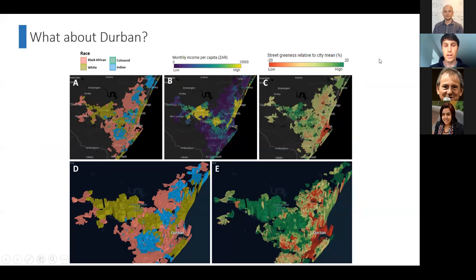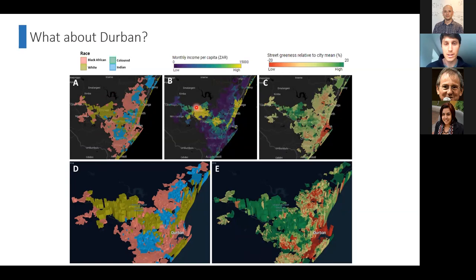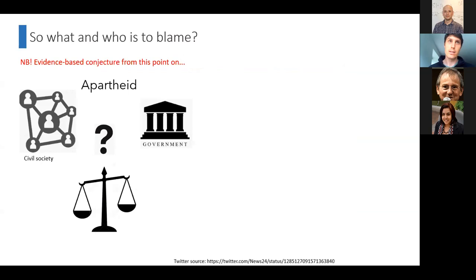Looking at eThekwini municipality specifically: on the left is the dominant race per census tract. Taking Hillcrest as an example — predominantly White citizens — in the center is mean monthly income, and Hillcrest shows a much higher per capita income. The suburb greenness relative to the city mean is also much greener than the rest of the city. The 3D graphs show income as the height of census tracts — just another way of visualizing spatial inequality.